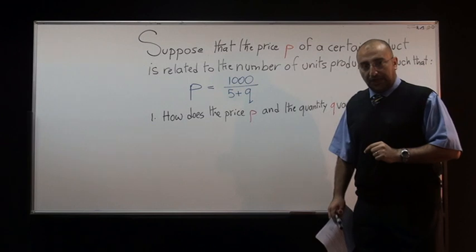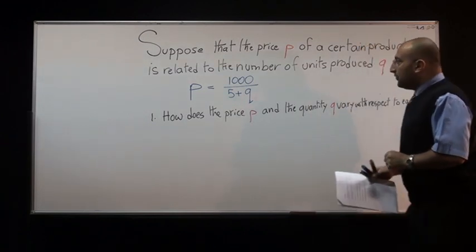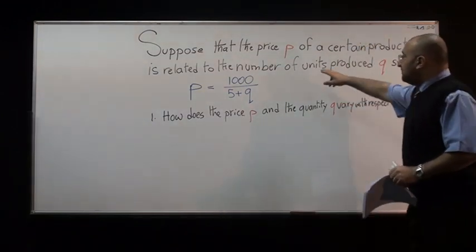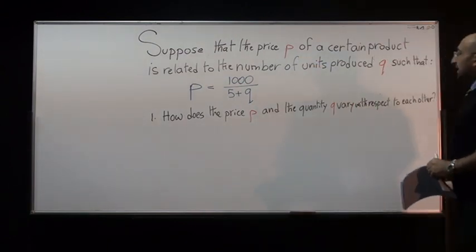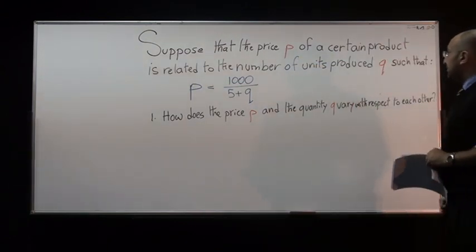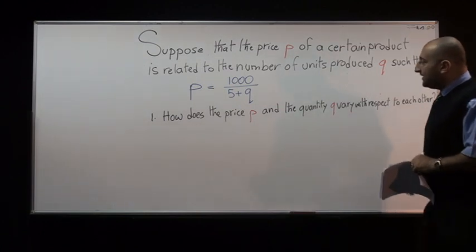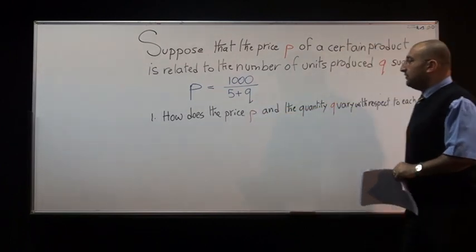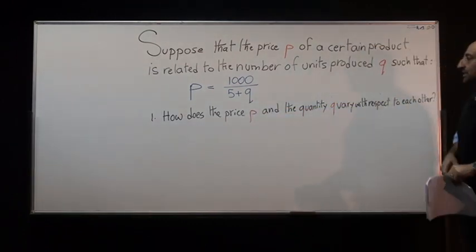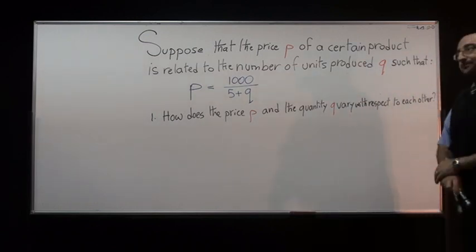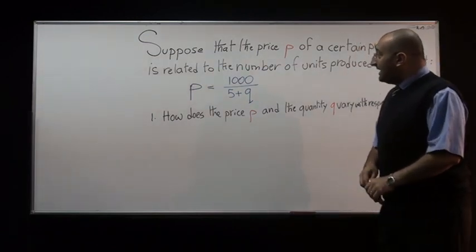The question we have in front of us is: suppose that the price P of a certain product is related to the number of units produced Q, such that P equals 1000 over (5 plus Q). How does the price P and the quantity Q vary with respect to each other?